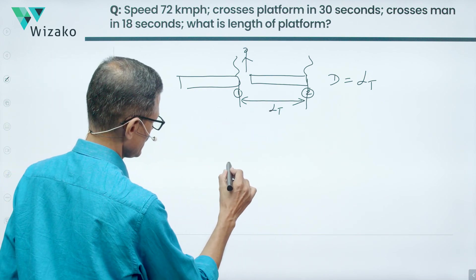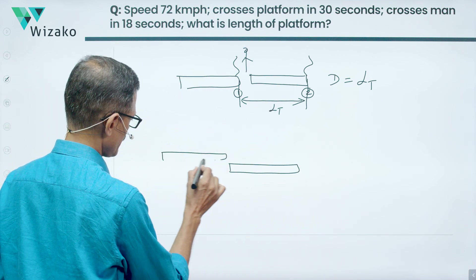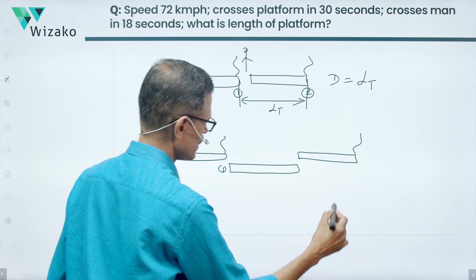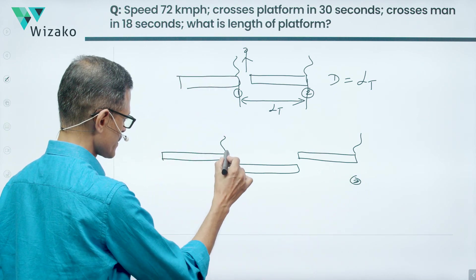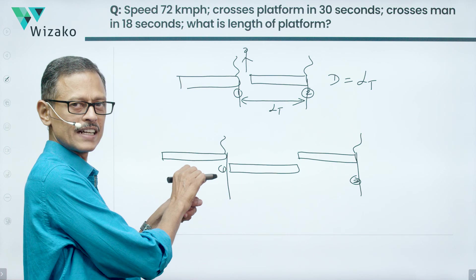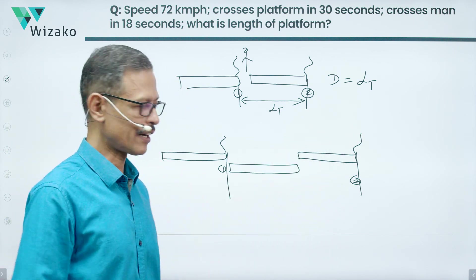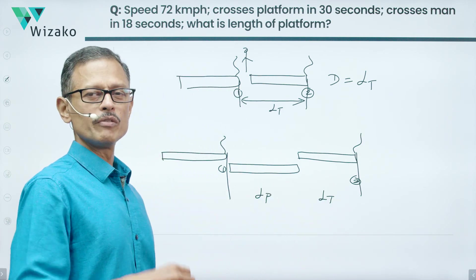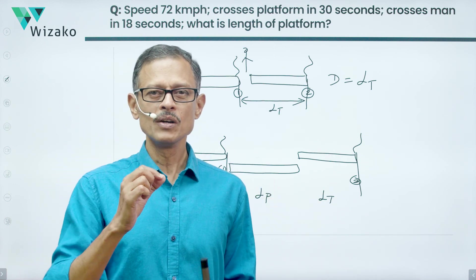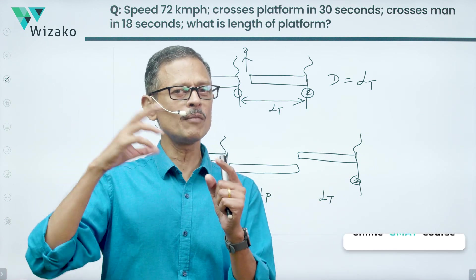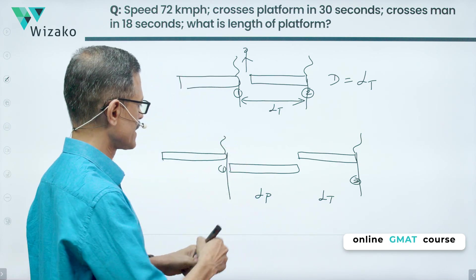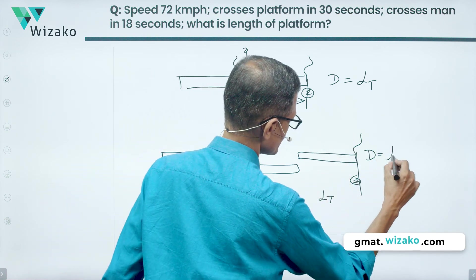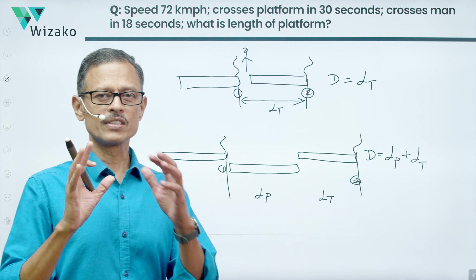The next scenario is when the train crosses a platform. Scenario 1 is when the engine is about to enter the platform; Scenario 2 is when the last carriage has left it. The distance traveled equals the length of the train plus the length of the platform, because the platform's length is comparable to the train's length. So the distance covered crossing a platform is the sum of both lengths.